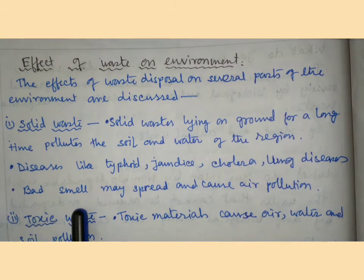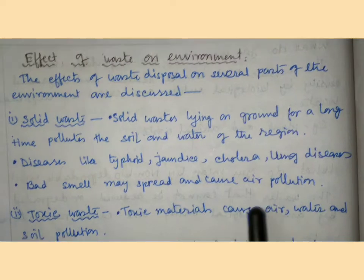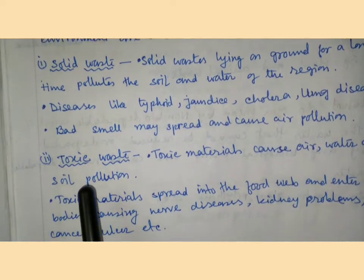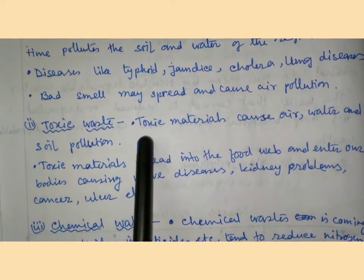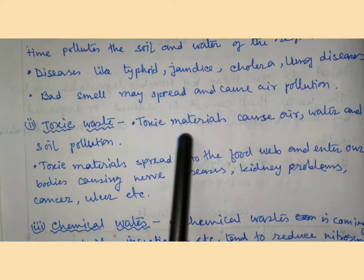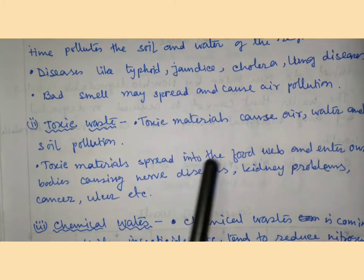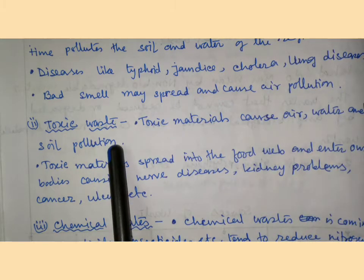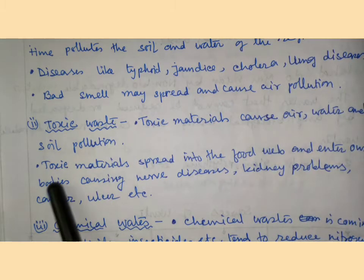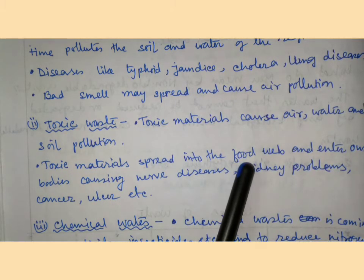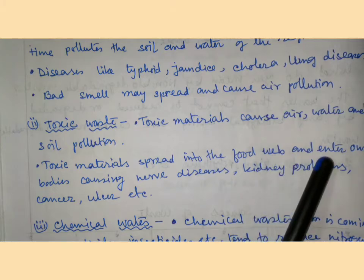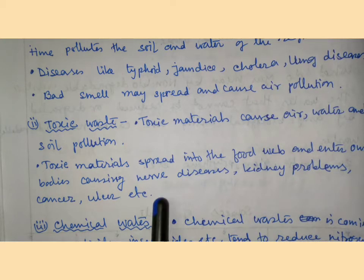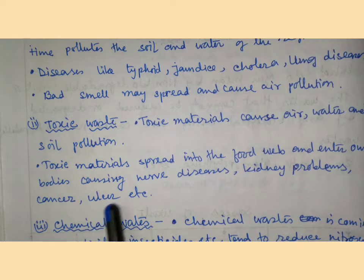Bad smell may spread and cause air pollution. Toxic material causes air, water, and soil pollution. Toxic material spreads into the food chain and enters our bodies, causing nerve disease, kidney problems, cancer, and ulcers.